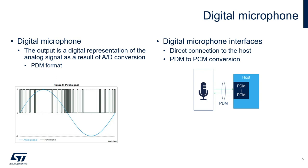This format is simple to obtain from a sigma-delta 1-bit ADC and can be easily transmitted using two signals: a clock line and a data line. In order to acquire a PDM stream, the host must have a serial interface and provide a clock to the microphone. An additional stage for PDM-to-PCM conversion, which can be performed in software or with specific hardware interfaces, is needed to obtain the stream in PCM format. We will refer to this as a PDM microphone and will go into details on this format in the following video.